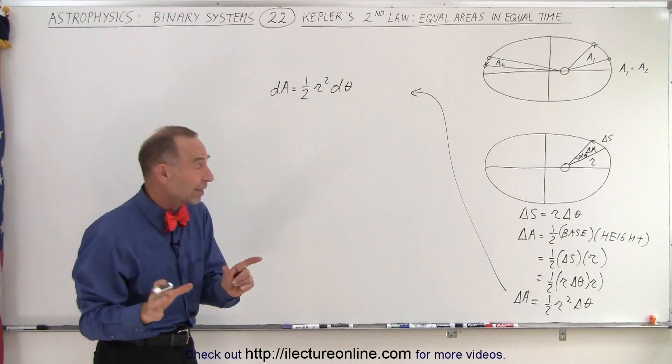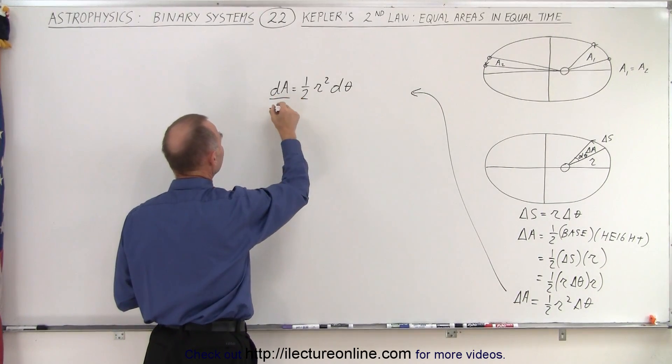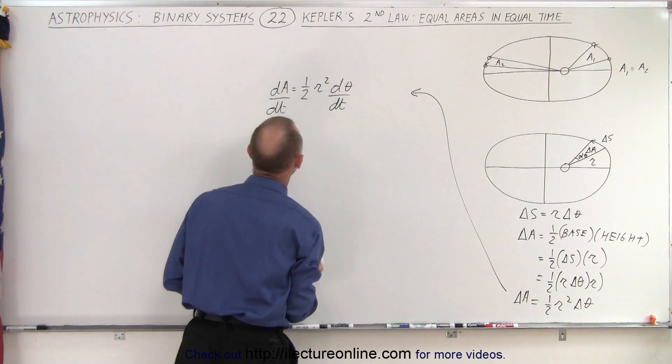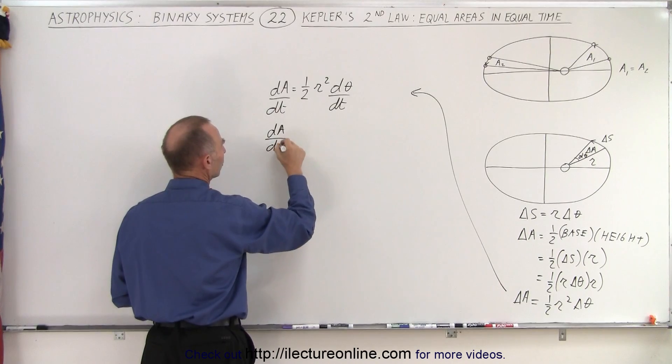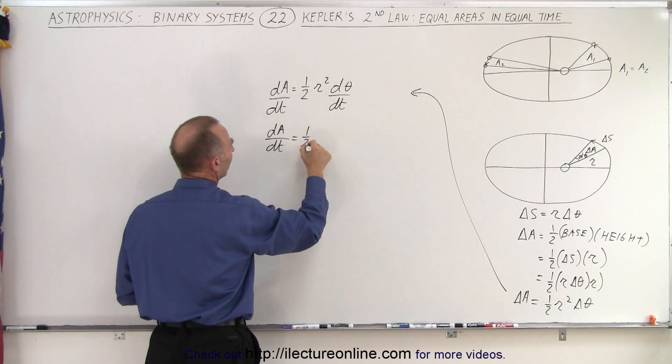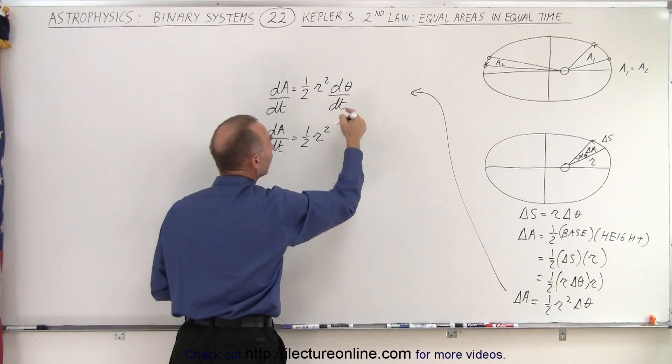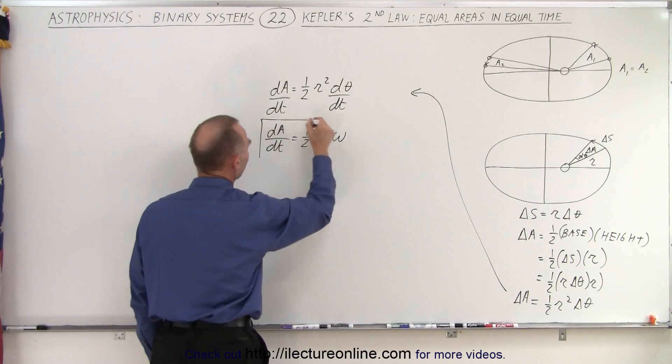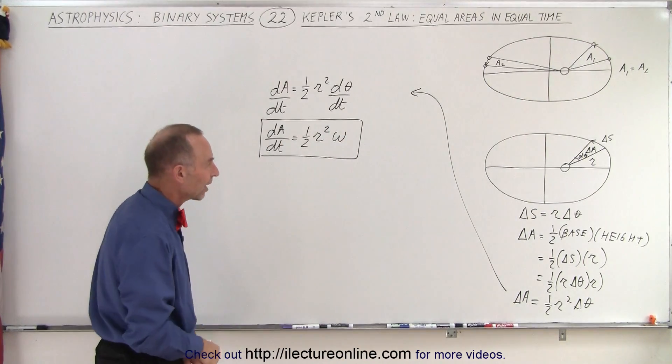So now what we're going to do is we're going to divide both sides by dt. So divide the left side by dt, divide the right side by dt, and so what we have here is that the amount of area swept out per unit time is therefore equal to one half times the radius squared, and of course d theta dt, that's simply the angular velocity omega. So this is how we can mathematically describe the area being swept out as a function of time.